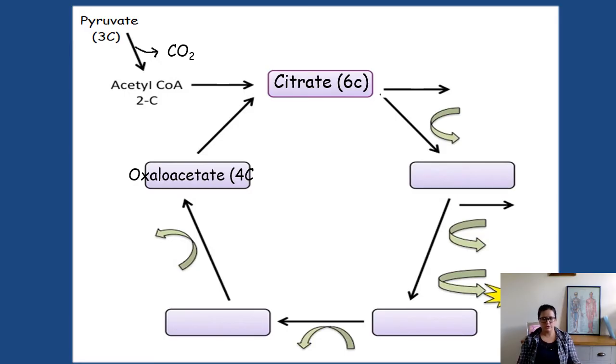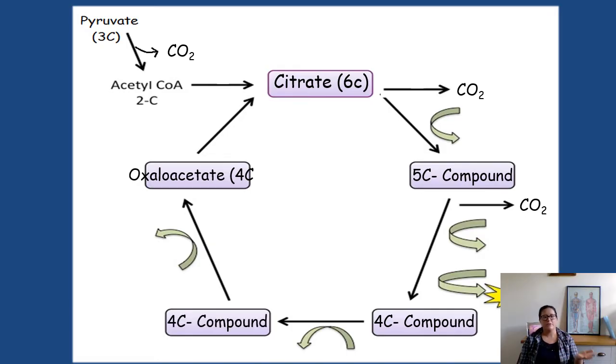Sometimes in internet resources, you might see this referred to as citric acid. Just like you cannot call pyruvate pyruvic acid, you must call citrate citrate, you can't call it citric acid. The idea behind this wheel of evil here is citrate is going to get broken down, it's going to start losing its carbons. Remember, if it's losing carbons, it loses them as carbon dioxide. So we go from six carbon citrate to a five carbon compound, we lose more CO2, and we end up with a four carbon compound, then we stay with a four carbon compound, and then it's converted back to oxaloacetate.